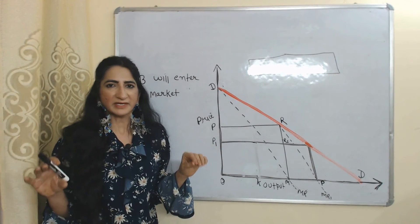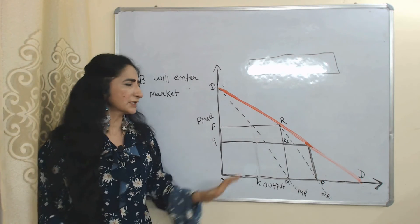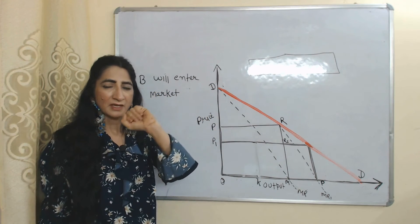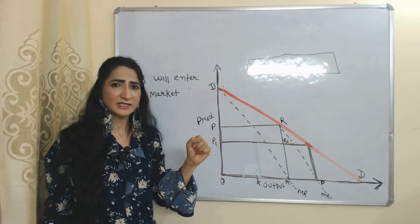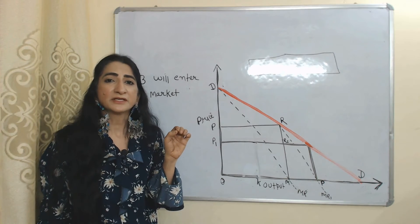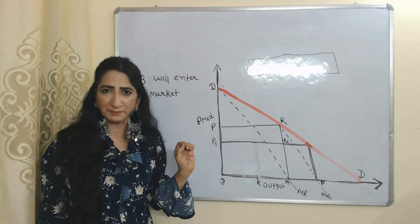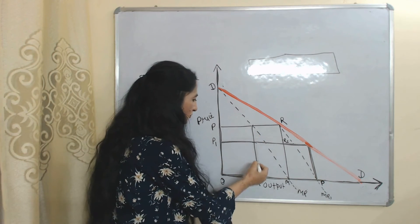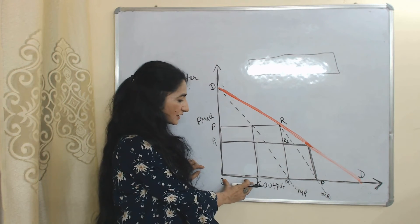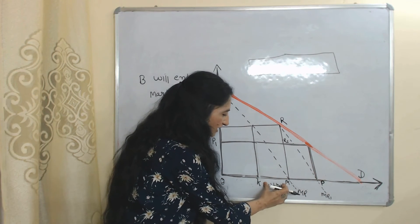Now the main twist comes in this model, which makes it very unique. A will not tolerate a reduction in profit. So A makes a unique strategy: A decides to reduce its output by exactly as much as B increased it. A reduces its output from OM to OK. The reduction made by A, which is KM, is exactly equal to MP — the amount by which B increased output.